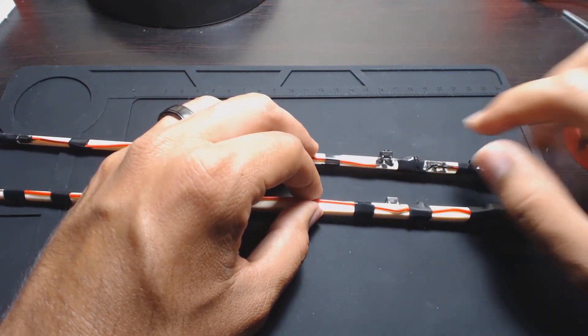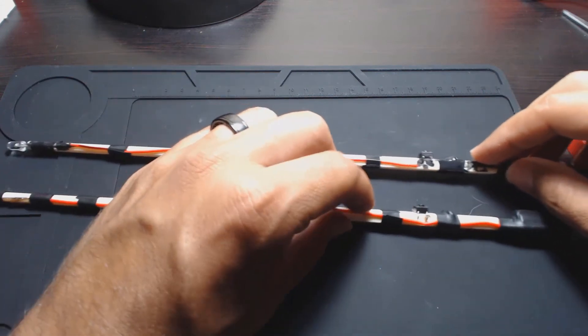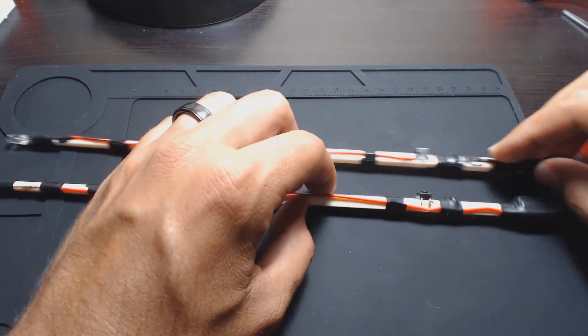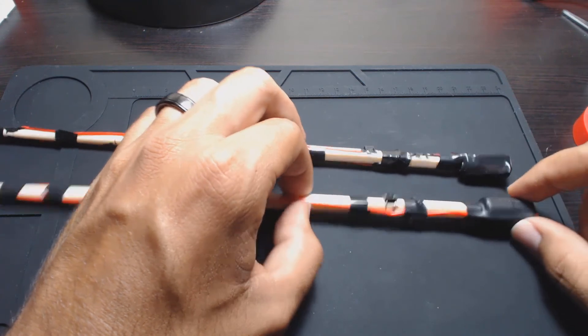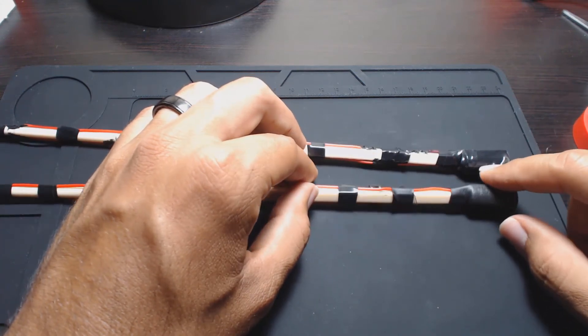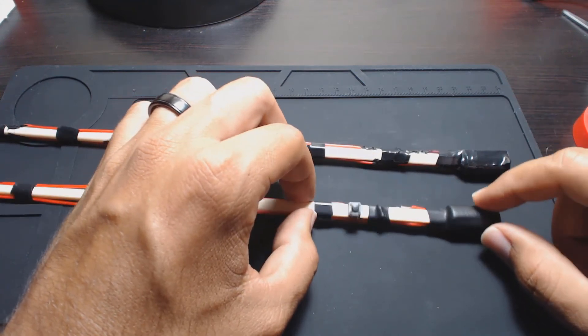So these are pretty much the same except for the heat shrink. I was a little worried about overheating the battery because those heat guns do provide a lot of heat, but I cooled it down and it seems to be working fine.